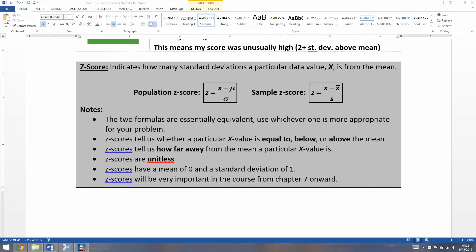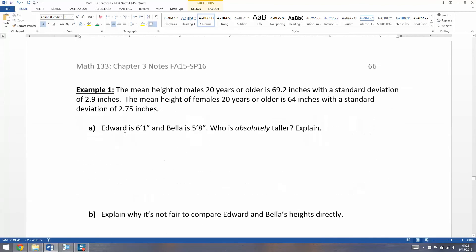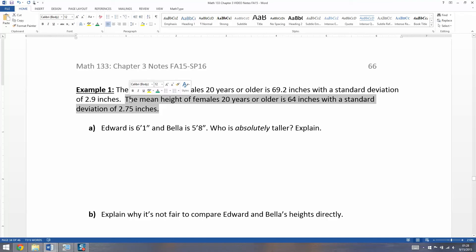Now that we know the definition of Z-score, both the population and sample Z-scores, we want to apply it to a problem. We're going to look at heights of individuals. The mean height of men 20 years or older is 69.2 inches with a standard deviation of 2.9 inches. The mean height of women 20 years or older is 64 inches with a standard deviation of 2.75 inches.